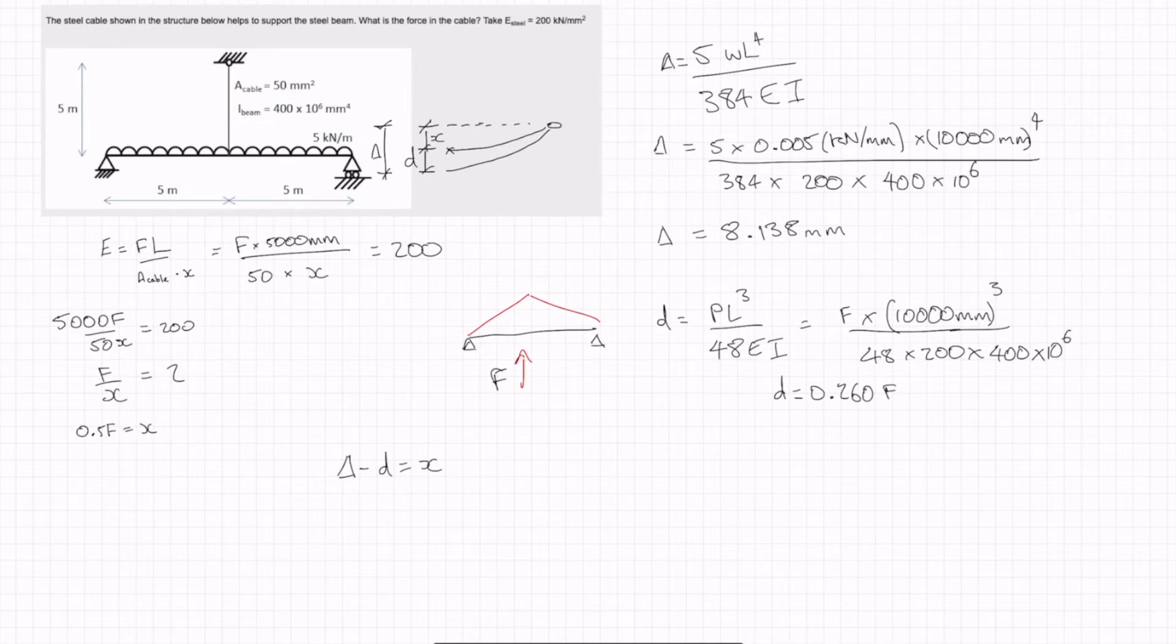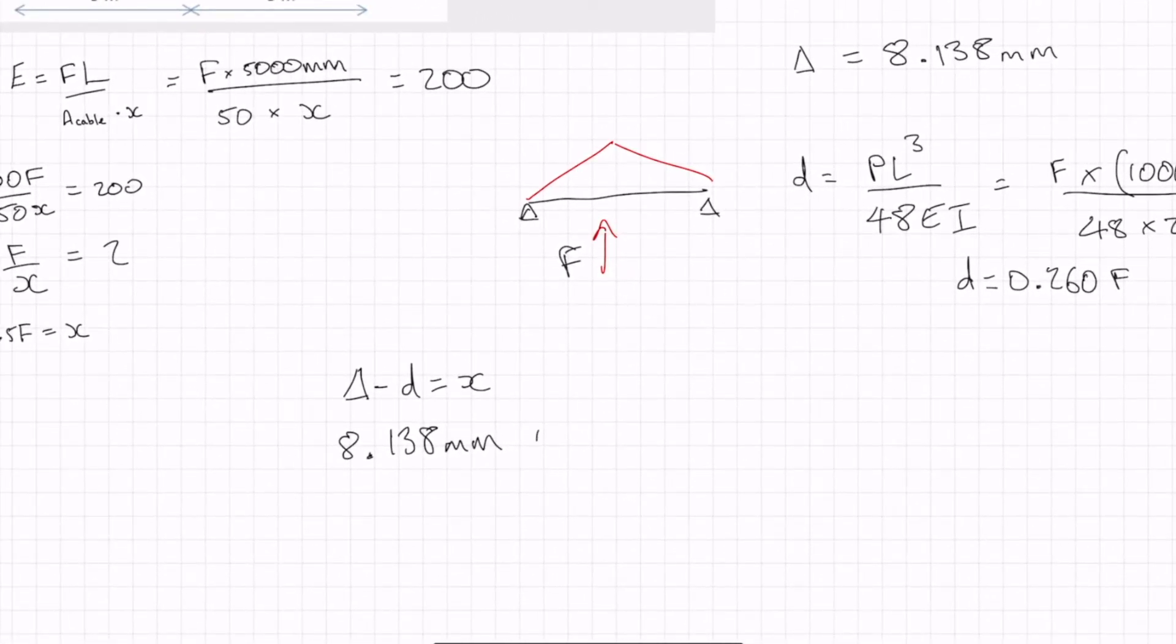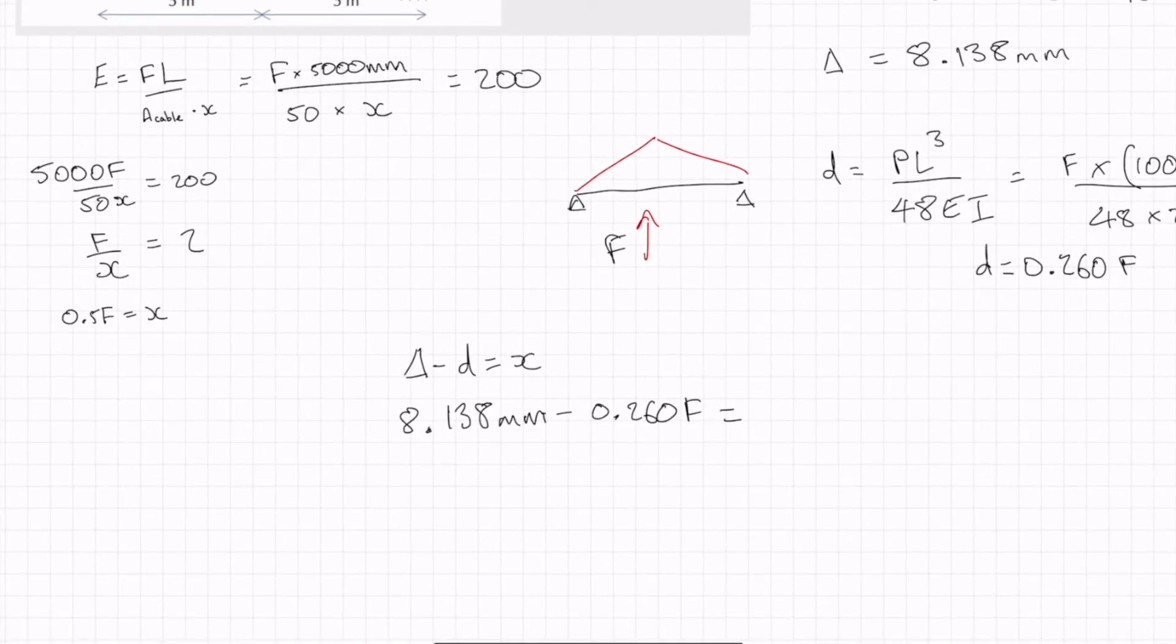So we have 8.138 millimetres minus 0.260F is equal to x which is equal to 0.5F. I've just plugged this equation back into here, which means we've got this equation 8.138 millimetres is equal to 0.76F.